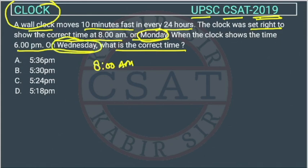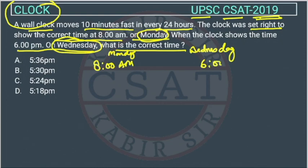Normally when we solve this question, we miss the important information that we are setting this clock right on Monday and the examiner is asking about Wednesday at 6 pm. Normally we consider that in the morning at 8 am the clock is set and in the evening how fast is it — but this question is not that. The examiner is asking about Wednesday 6 pm.